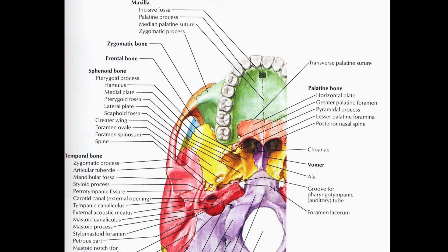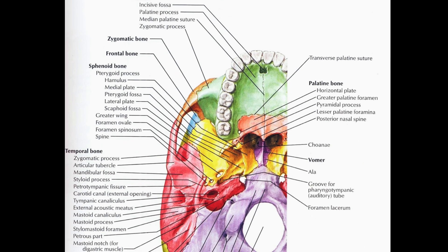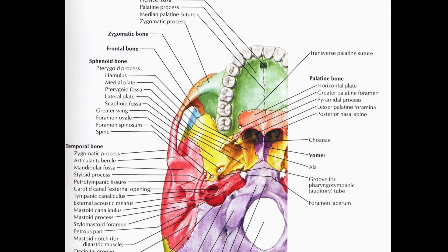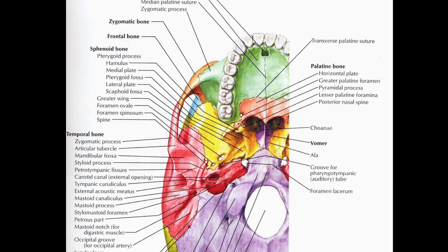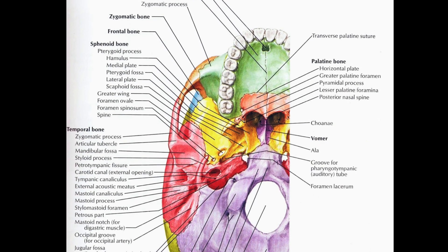In this diagram, you will be able to identify different bones separately like maxilla, zygomatic bone, sphenoid bone, temporal, parietal, occipital bones and the foramina which I have mentioned earlier.